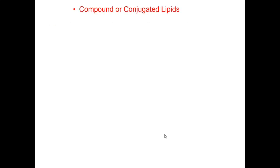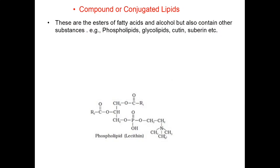Compound or conjugated lipids are esters of fatty acids and alcohol but also contain other substances. For example, phospholipids, glycolipids, cutin, suberin, etc.